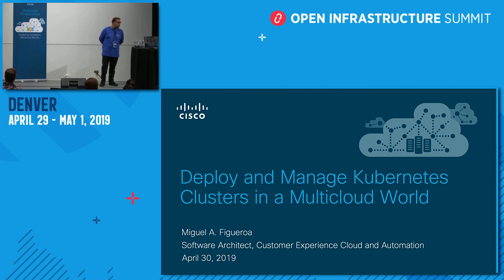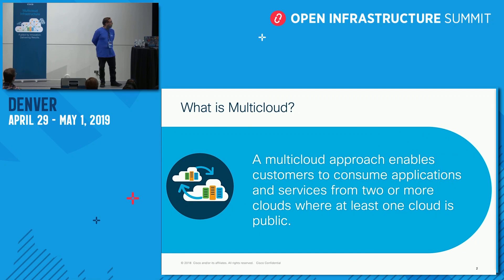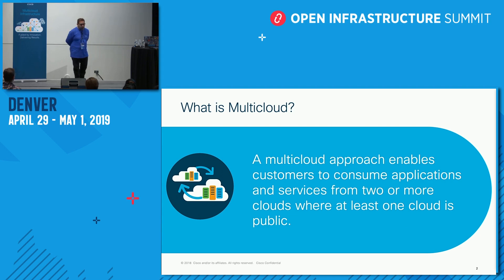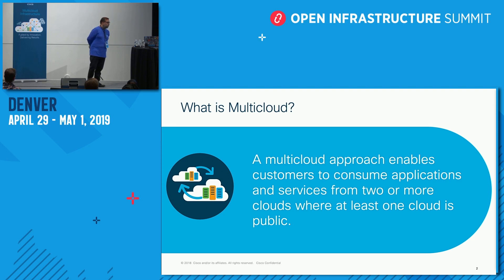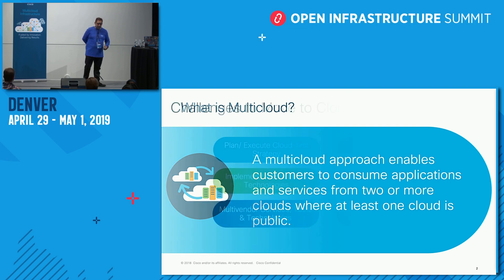As we all know by now, Kubernetes is the de facto standard these days for deploying our microservices. So first, let's decide on what the definition of multi-cloud is. A multi-cloud approach enables customers to consume applications and services from two or more clouds, where at least one cloud is public. We mostly talk about Microsoft, Amazon, and Google — but what about the cloud in your own data center? This is where Cisco comes in.